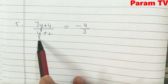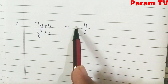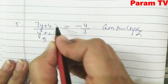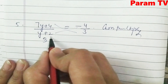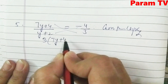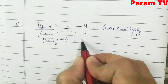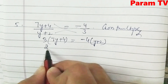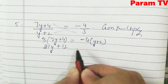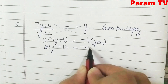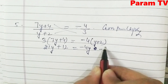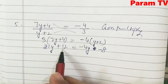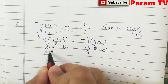Question number 4: (7y + 4) / (y + 2) = −4/3. Cross multiply: 3 × (7y + 4) = −4 × (y + 2). Expanding: 21y + 12 = −4y − 8. Transpose the terms — y terms on one side, constants on the other.